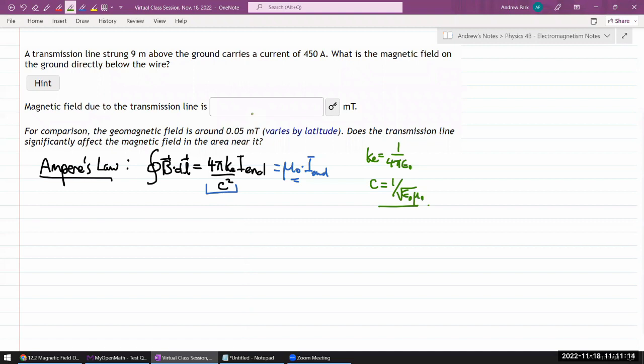Just like with Gauss's law, in a situation with sufficient degrees of symmetry, we can use this. The idea is that in this integral, if you can somehow make enough symmetry arguments to pull this magnetic field outside of the integral, you can solve for it. That's really the whole idea.